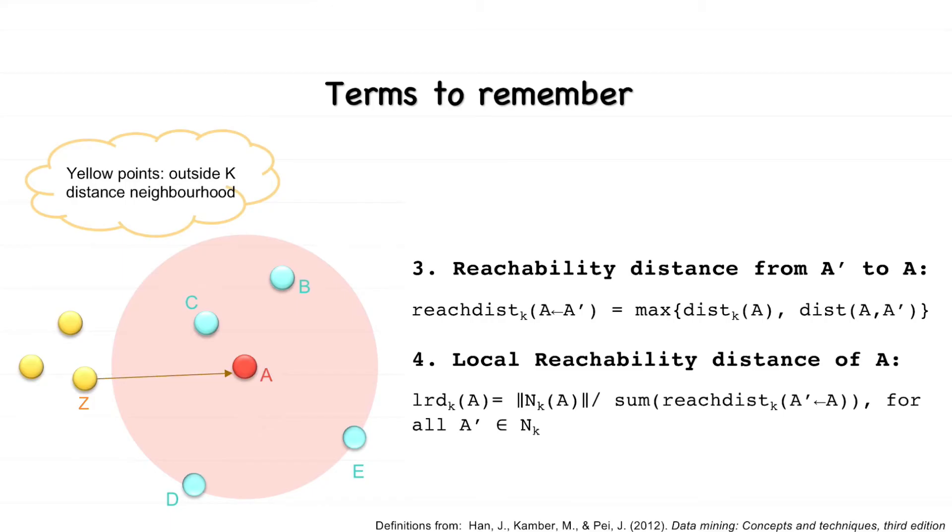For two objects A and A', the reachability distance from A' to A equals the k-distance of A if the actual distance between A and A' is less than the k-distance, else it is the actual distance between the two points. Please note that the reachability distance is not symmetric.